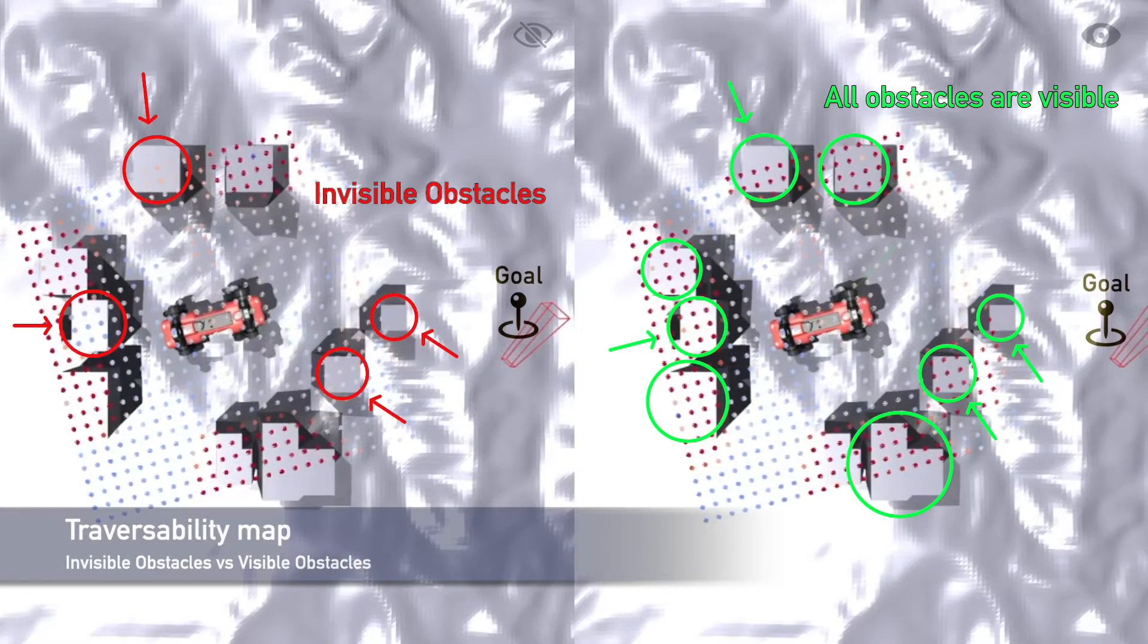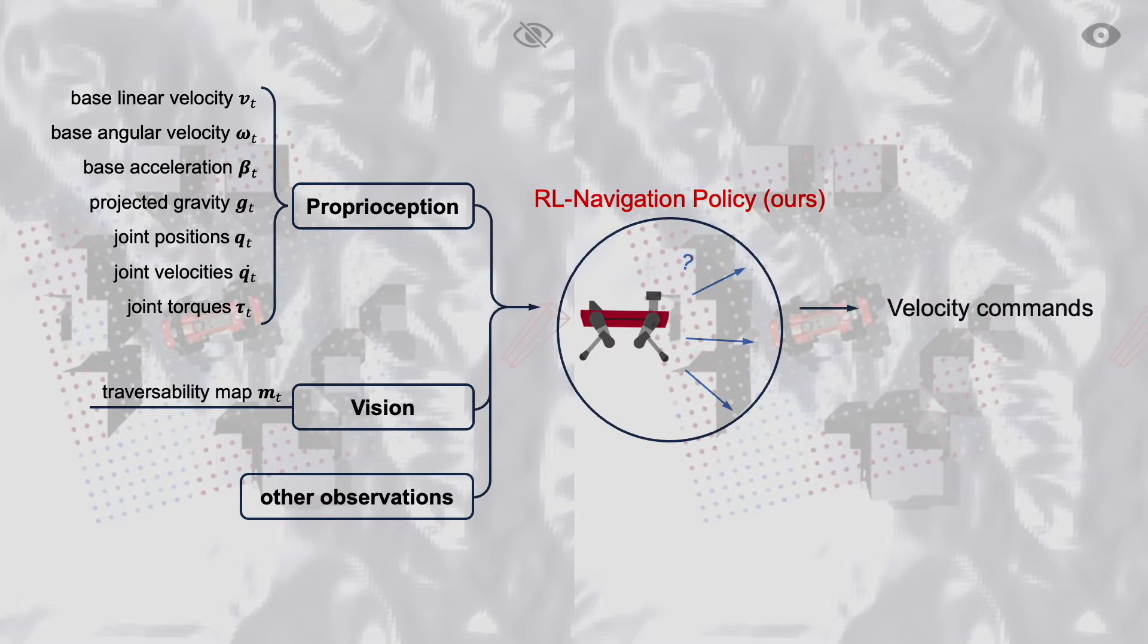More specifically, the exteroception is in the form of a robot-centric traversability cost map, and the proprioception consists of base linear velocity, base angular velocity, base acceleration, projected gravity, joint positions, joint velocities, and joint torques.